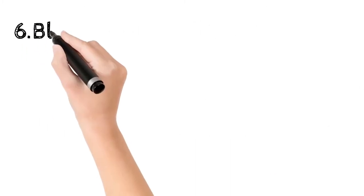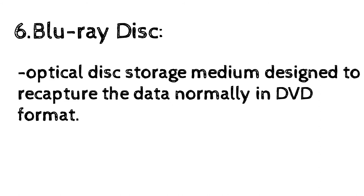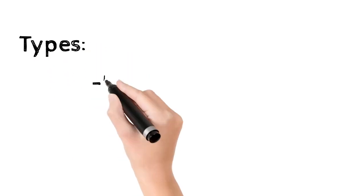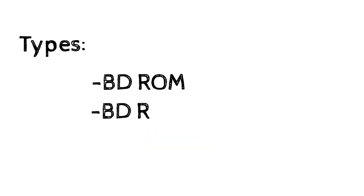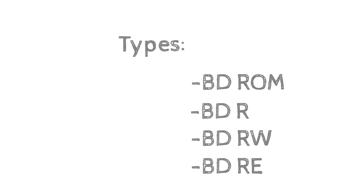Next is Blu-ray disc, an optical disc storage medium designed to store data normally in the DVD format. The name Blu-ray refers to the blue laser used to read the disc, which allows information to be stored at a greater density. The format variations are: BD-ROM (read-only, for pre-recorded content), BD-R (recordable, for PC data storage), BD-RW (rewritable, for PC data storage), and BD-RE (rewritable, for HD TV recording).